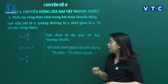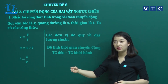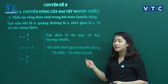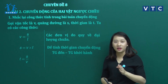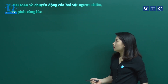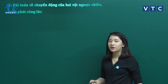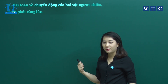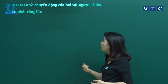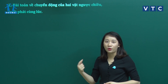Để tính được thời gian chuyển động, chúng ta sẽ lấy thời điểm đến trừ đi thời điểm khởi hành. Sau khi nhắc lại rồi thì cô sẽ đi vào bài toán phức tạp của ngày hôm nay, đó là bài toán chuyển động của 2 vật ngược chiều và xuất phát cùng một lúc.